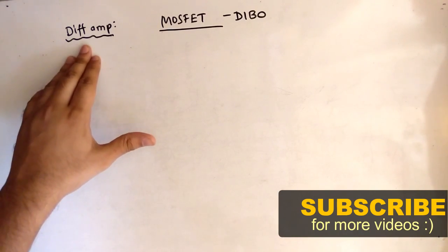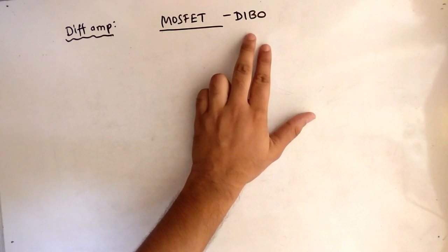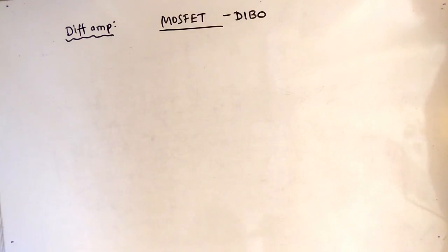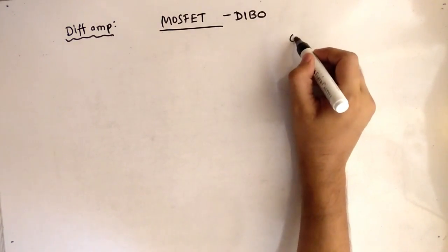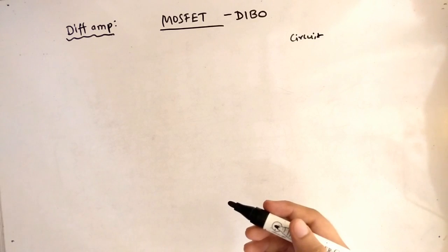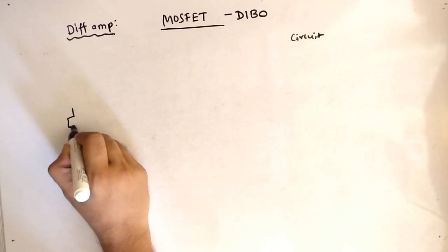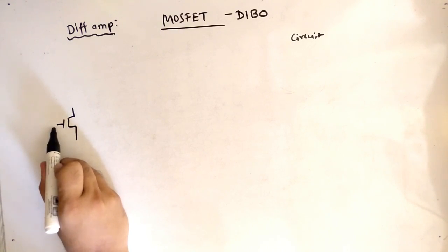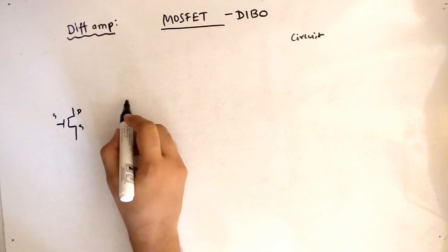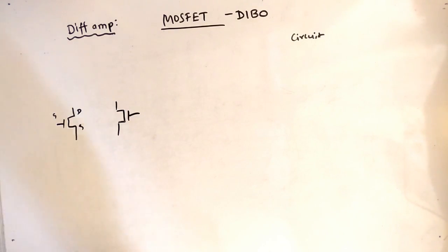Hello friends, today our topic is differential amplifier using MOSFET. The circuit is DIBO, which stands for Dual Input Balanced Output. First, let's see the circuit, then we will move to DC analysis and AC analysis. To start, we have to draw two MOSFETs — this is the gate side, this is the drain side, and this is the source side.